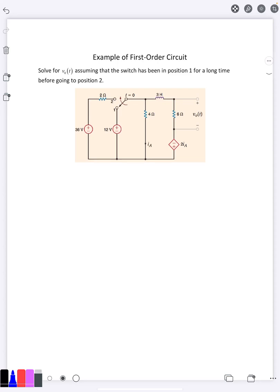In this video we're going to solve an example of an RL circuit. This particular version is a little bit more complicated than some of the other ones. We have two independent sources and a dependent source we're going to have to deal with here.